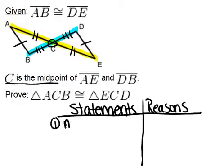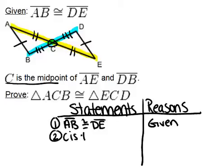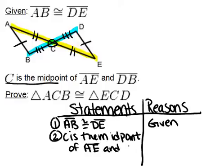So given is AB is congruent to DE, and that's given. And also, C is the midpoint of AE and DB. And again, that statement is given. That's the way we know that.